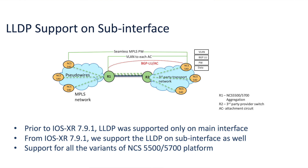The other feature enhancement is around LLDP support. Prior to IOS XR 7.9.1, LLDP was supported only on the main interface. But in some scenarios, customers need the LLDP packets to be sent over with VLAN tags. If LLDP is supported only per port or if the platform doesn't support LLDP with VLAN tags, then end-to-end LLDP discovery won't happen. To address this problem, from 7.9.1, we have started supporting LLDP for subinterfaces as well. This is supported across the NCS 5500 and 5700 portfolio.